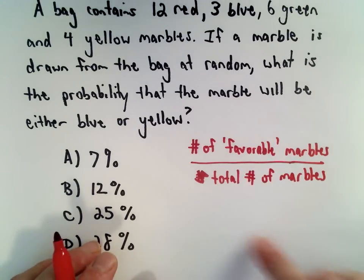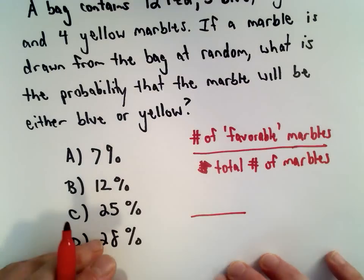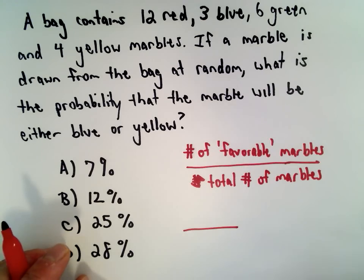So we'll look at the number of favorable marbles divided by the total number of marbles. That's going to give us our fraction, and we can use our calculator to calculate the probability.